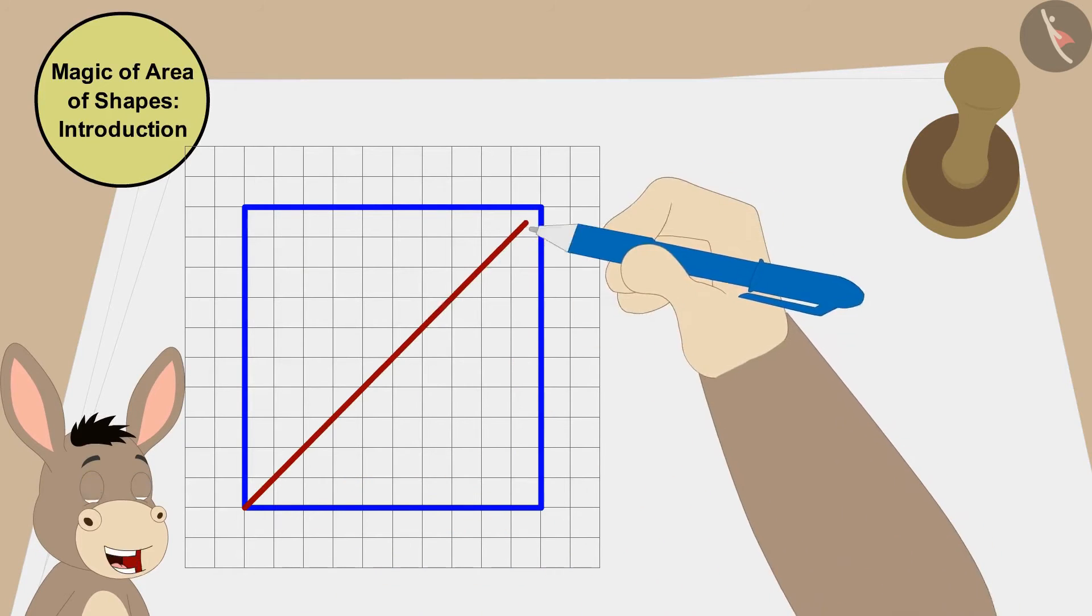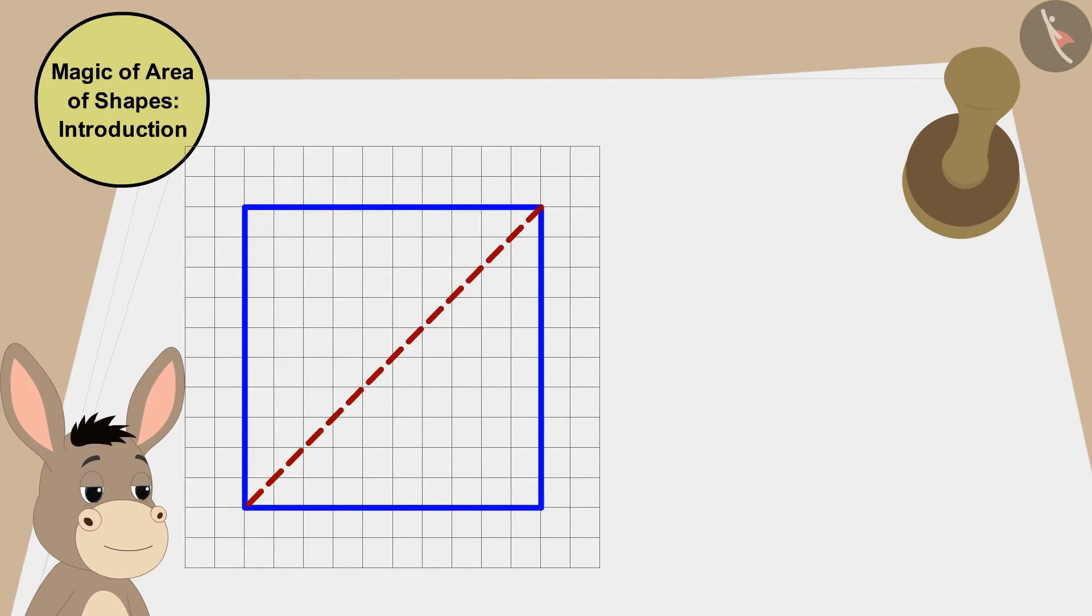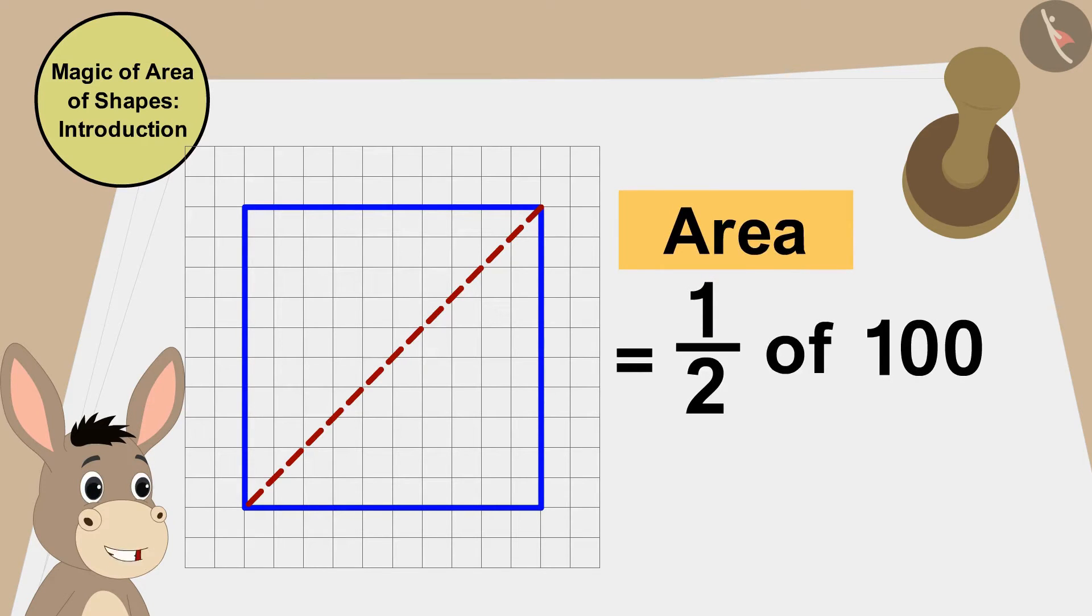If I draw a straight line like this, I will divide this cashew barfi into two equal triangles. And because both triangles are half of this cashew barfi, both of the areas of the triangles will be half or 50 square centimeters of the area of cashew barfi.